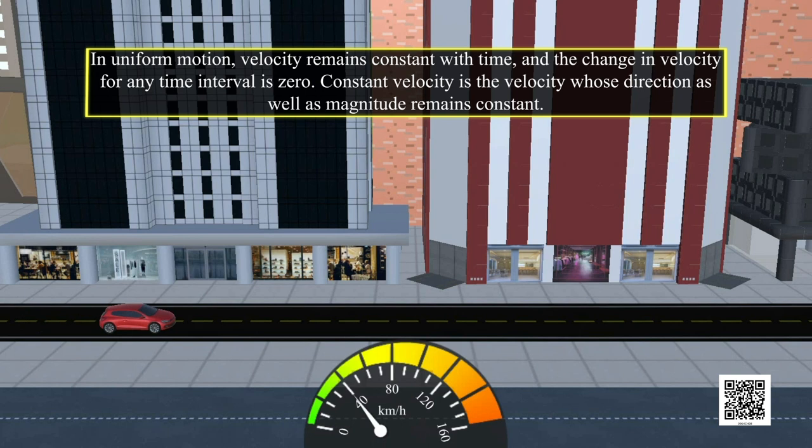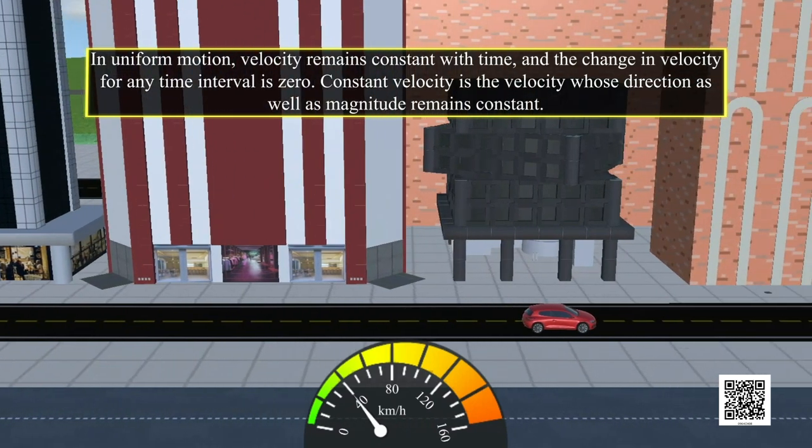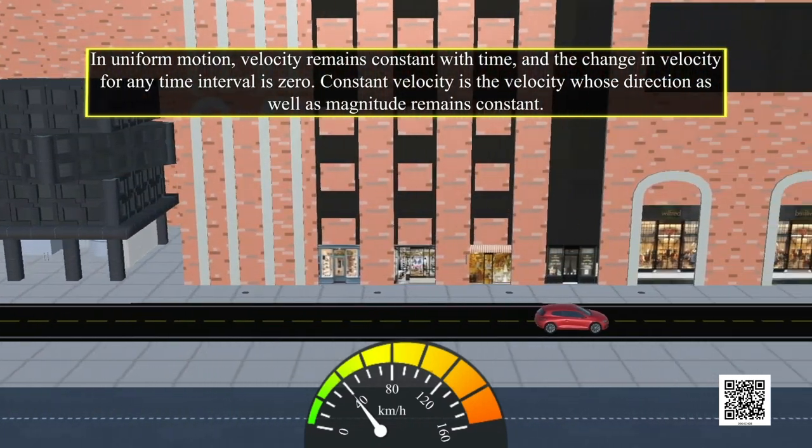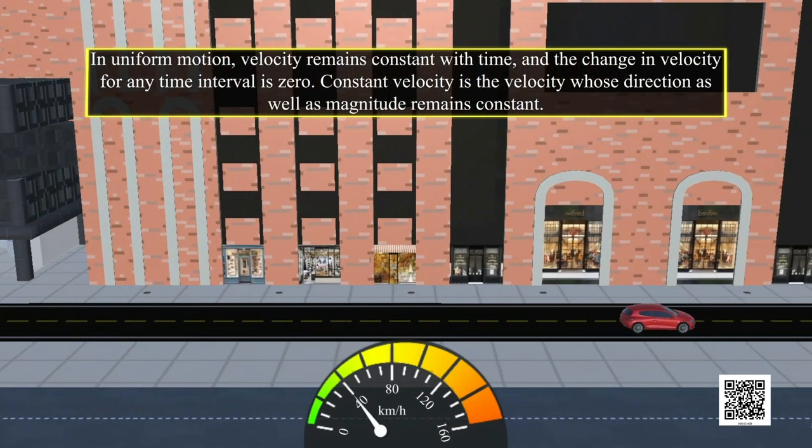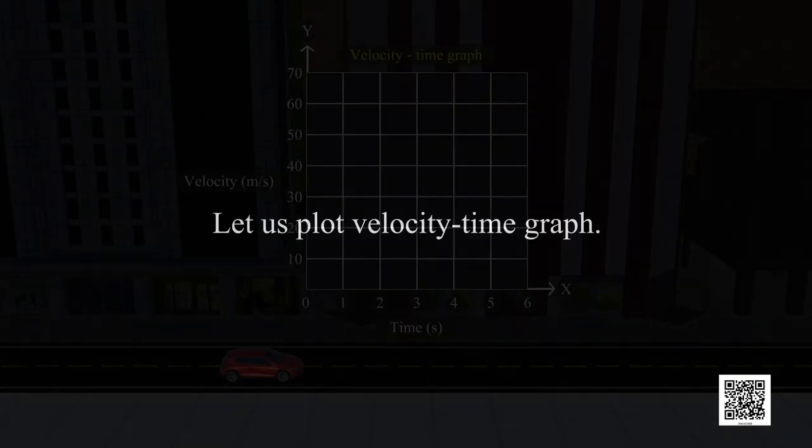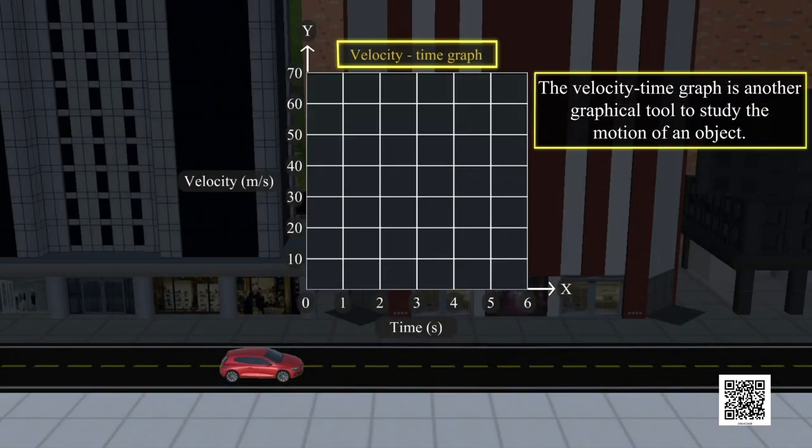with time, and the change in velocity for any time interval is zero. Constant velocity is the velocity whose direction as well as magnitude remains constant. Let us plot the velocity-time graph. The velocity-time graph is another graphical tool